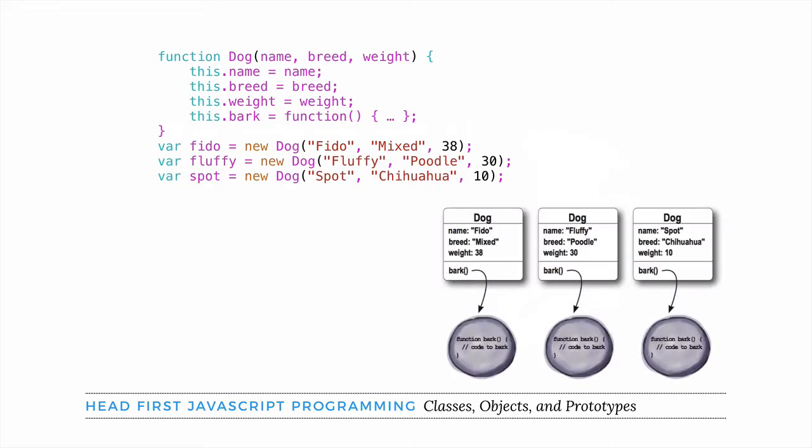In Head First JavaScript Programming, Eric and I take you through how to make constructor functions and how to use them to make objects with properties like name, breed, and weight, as well as methods like bark.